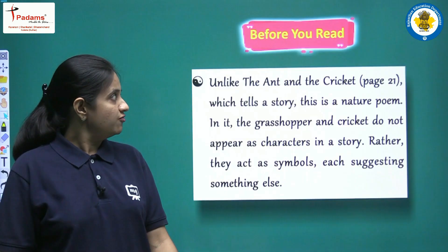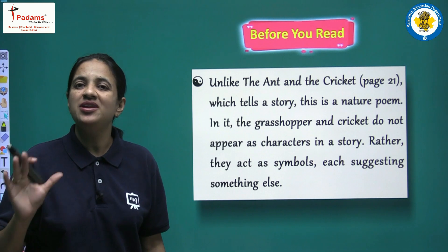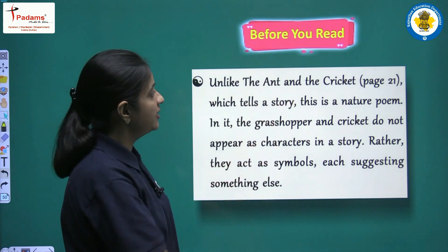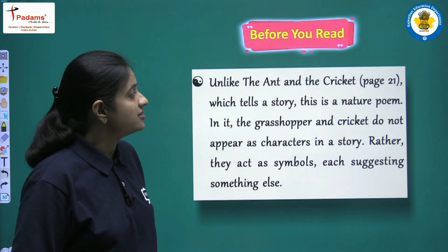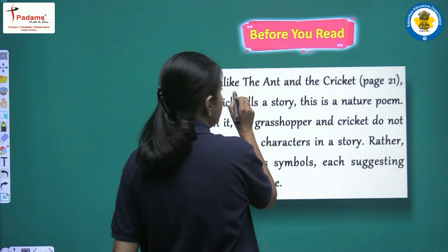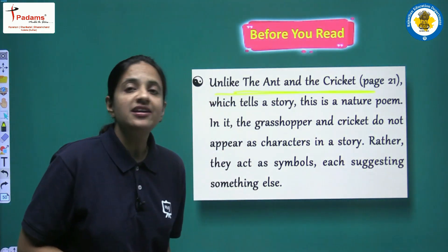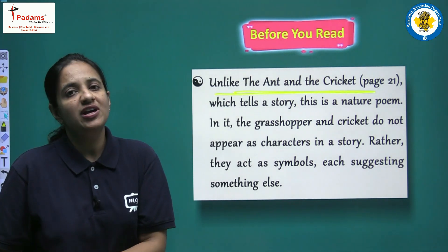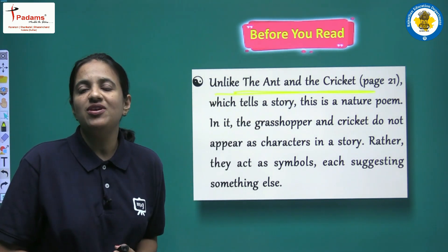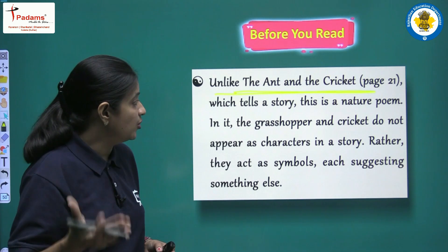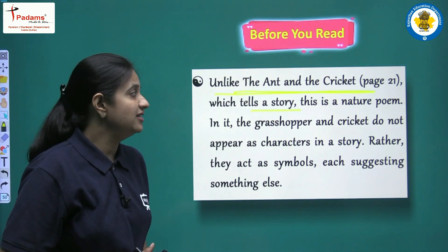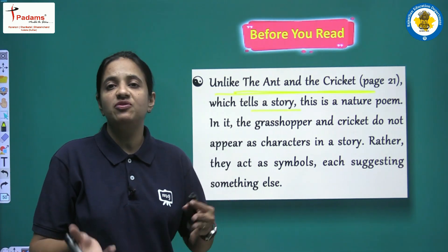Before starting the poem, let's have some idea about it. Unlike 'The Ant and the Cricket' on page 21, which tells a story, this is a nature poem. In 'The Ant and the Cricket' we had two creatures — the ant and the cricket — but that poem had a story. This poem, however, is a nature poem, and that is the key difference between the two.